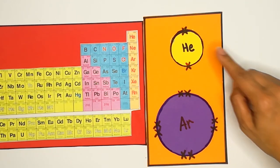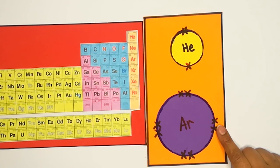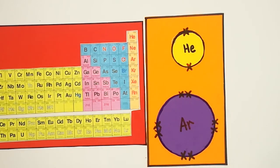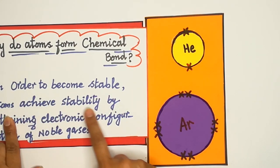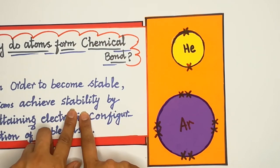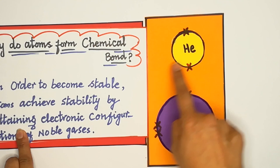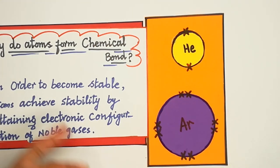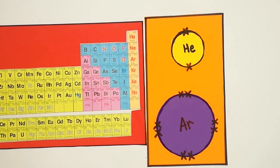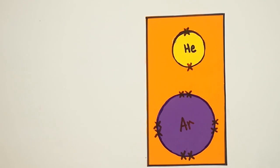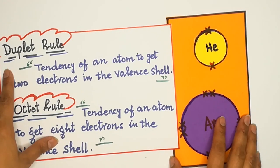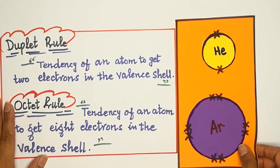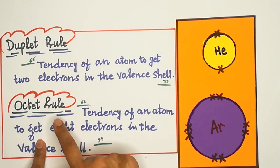Pehla shell 2 electrons se complete hota hai — isko duplet kehte hain. Aane wale tamam valence shells 8 electrons se complete hote hain — isko octet kehte hain. Octet matlab 8. So, in order to become stable, atoms achieve stability by attaining the electronic configuration of noble gases — isliye atoms chemical bond bana rahe hain.